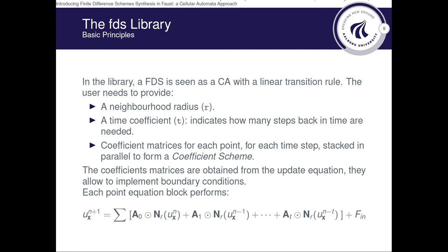In the library, a finite difference scheme is seen as a cellular automaton with a linear transition rule. The user needs to provide a neighborhood radius, which indicates how many side point states are needed on the left and on the right, a time coefficient t, which indicates how many steps back in time are needed.